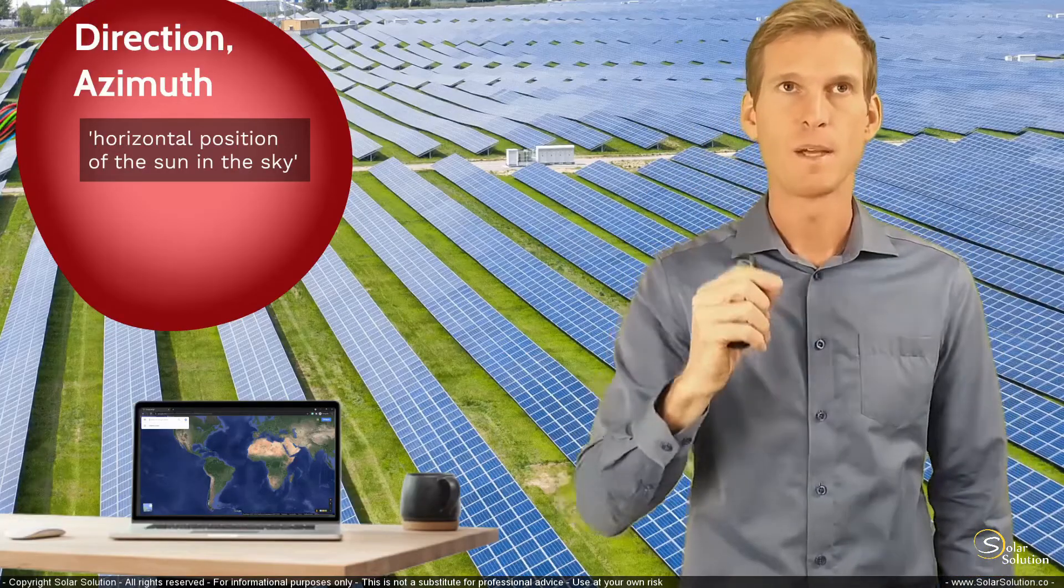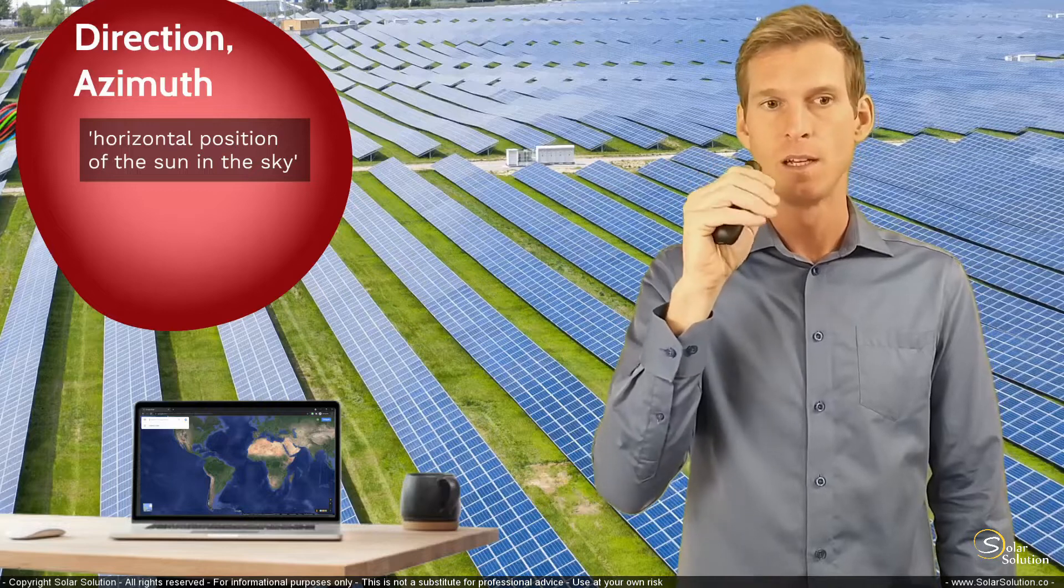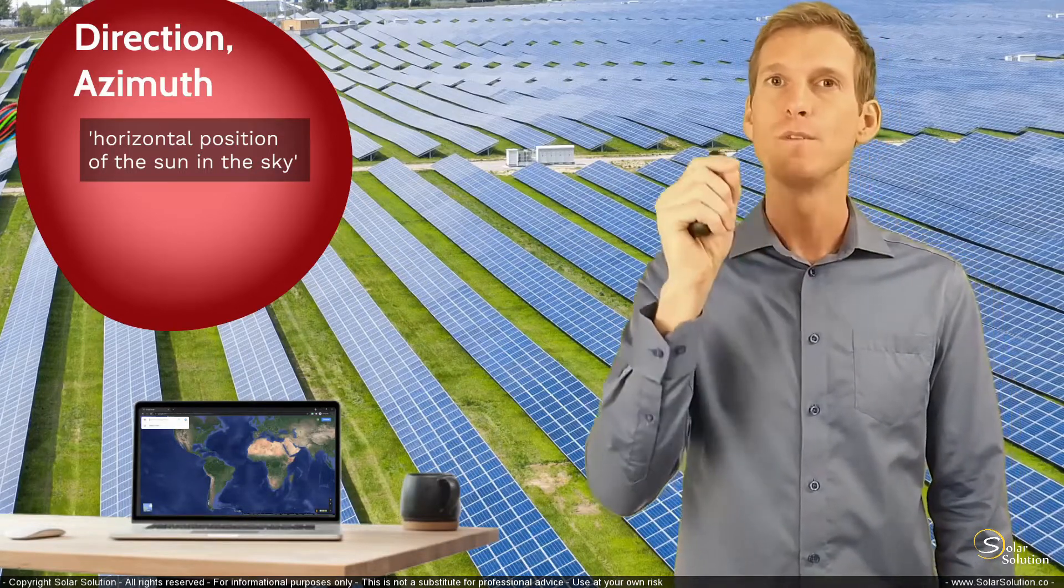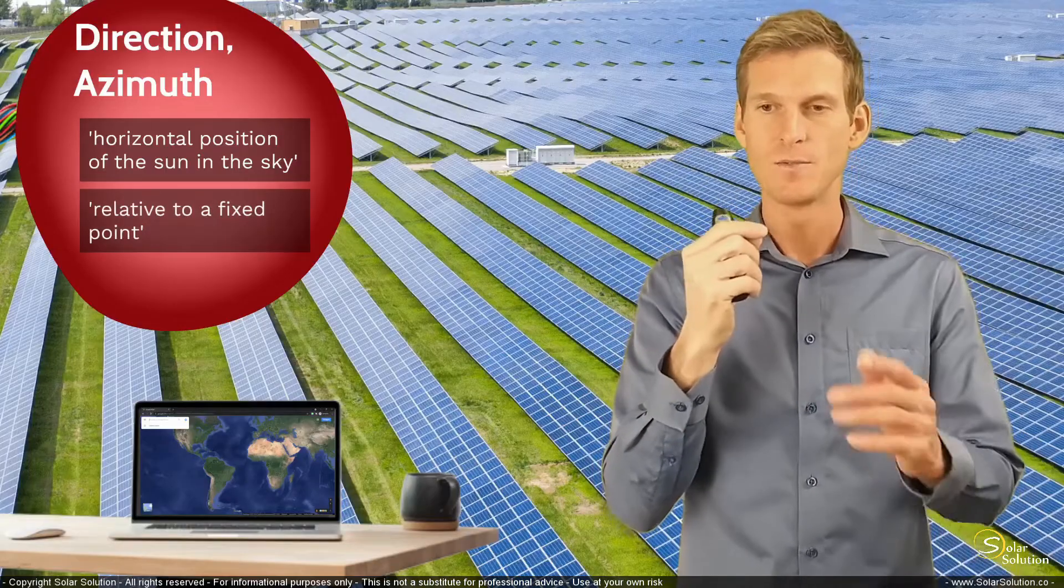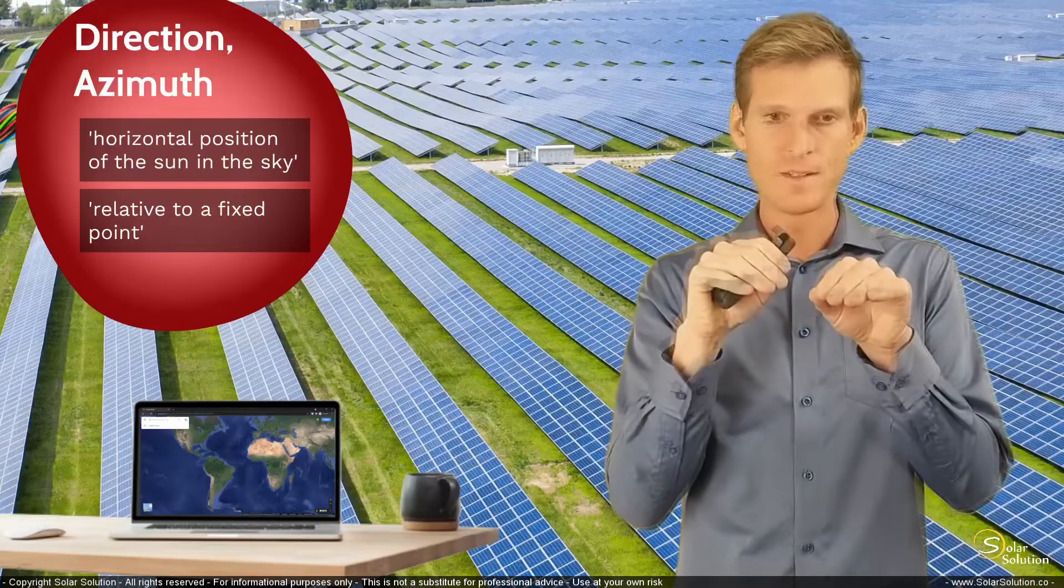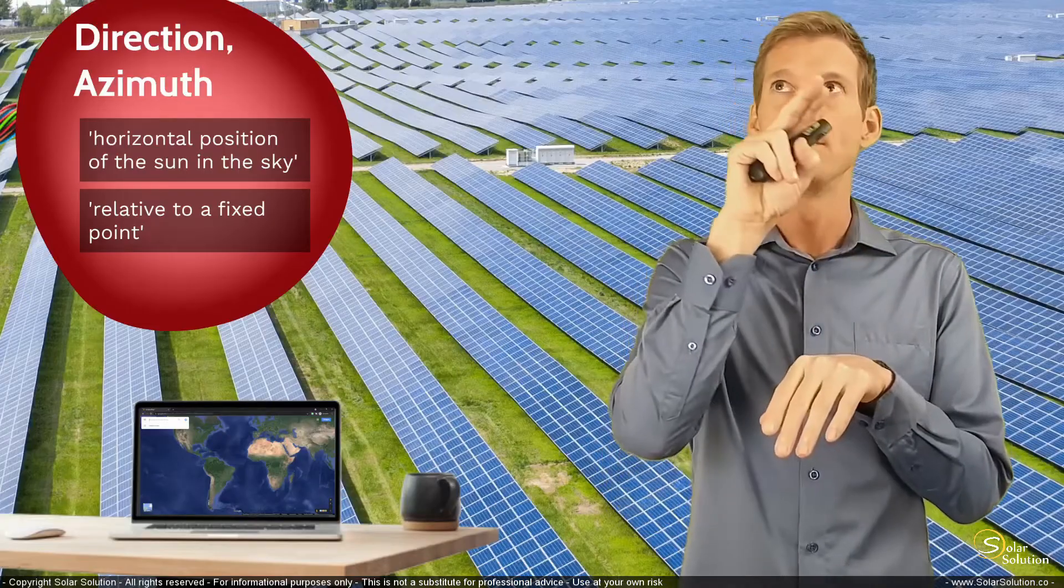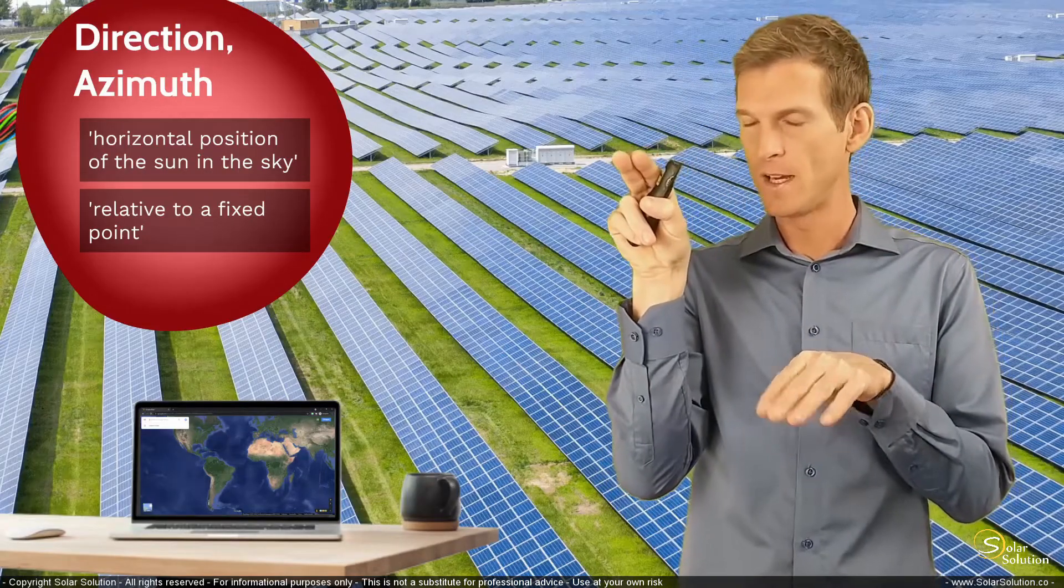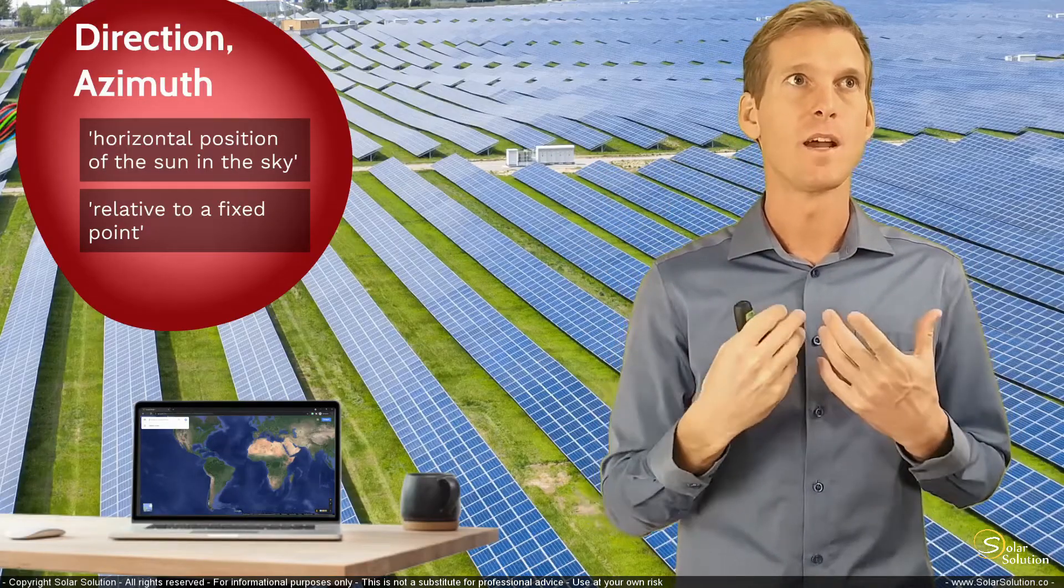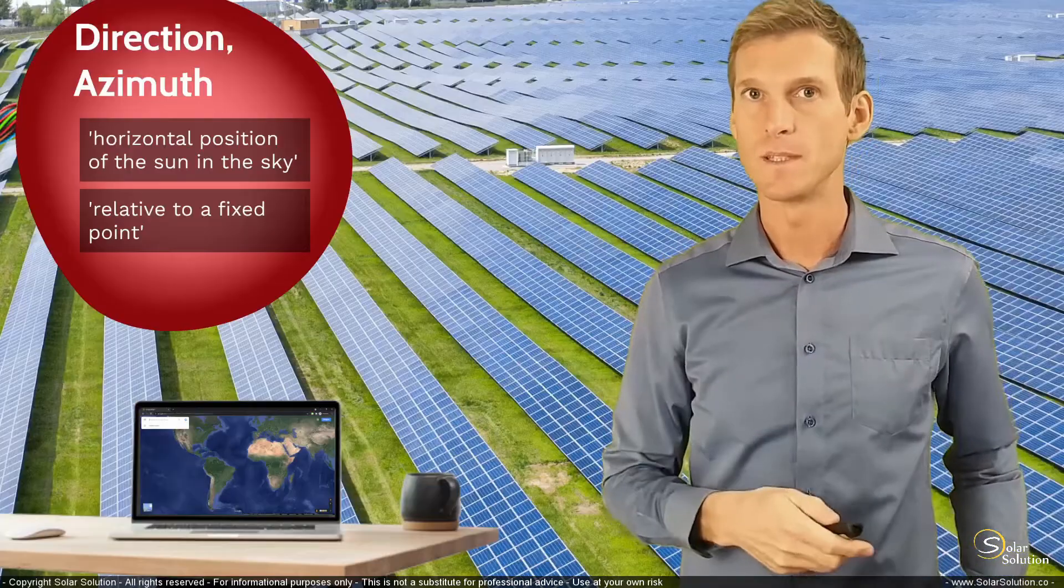And what's key in this is that I'm explaining where the sun is relative in the horizontal plane with reference to a fixed point. Because if you want to explain to me what the azimuth is, you need to say the sun is somewhere there relative to a fixed point. So those are the two key characteristics of azimuth.